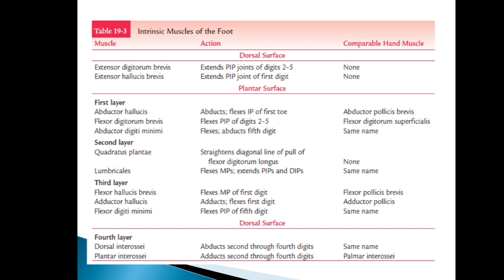The intrinsic muscles include: on the dorsal surface — extensor digitorum brevis and extensor hallucis brevis. On the plantar surface there are four layers. The first layer includes abductor hallucis, flexor digitorum brevis, and abductor digiti minimi. The second layer includes quadratus plantae and lumbricals. The third layer includes flexor hallucis brevis, adductor hallucis, and flexor digiti minimi. The fourth layer includes the dorsal and plantar interossei. Thank you.